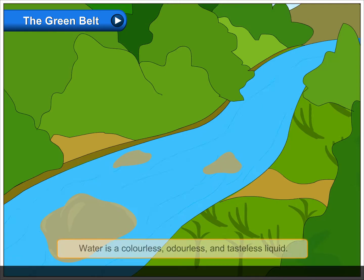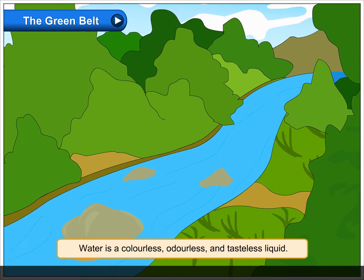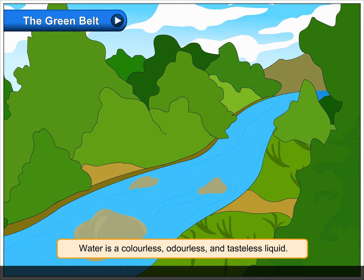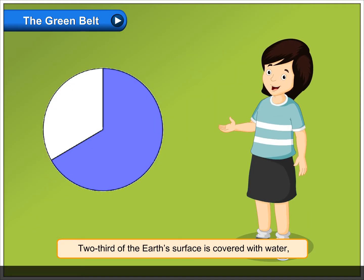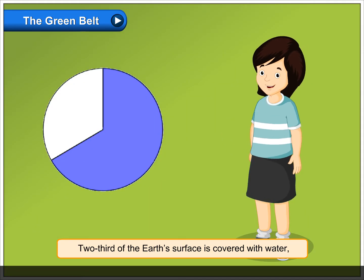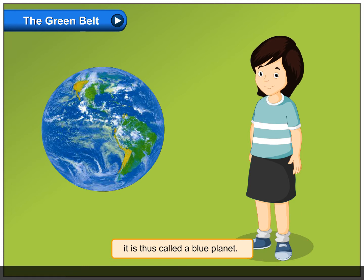The Green Belt. Water is a colorless, odorless and tasteless liquid. Two-thirds of the Earth's surface is covered with water. It is thus called a blue planet.